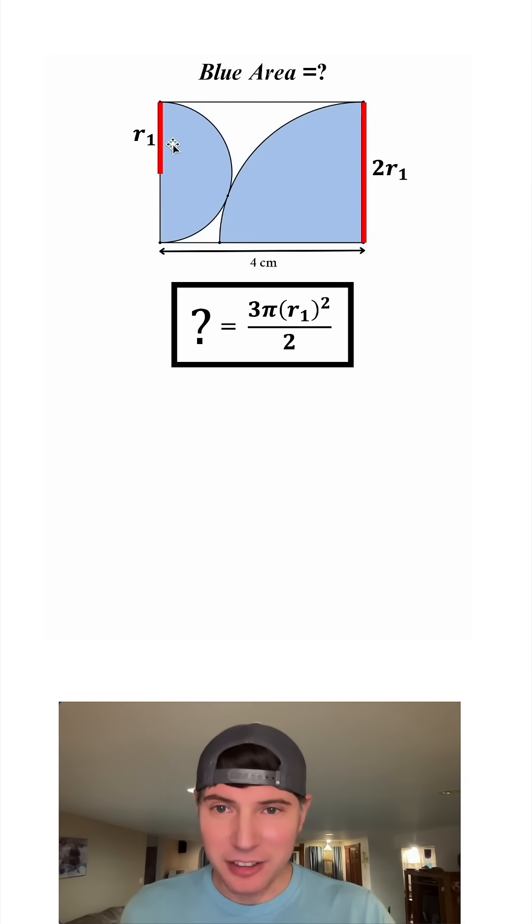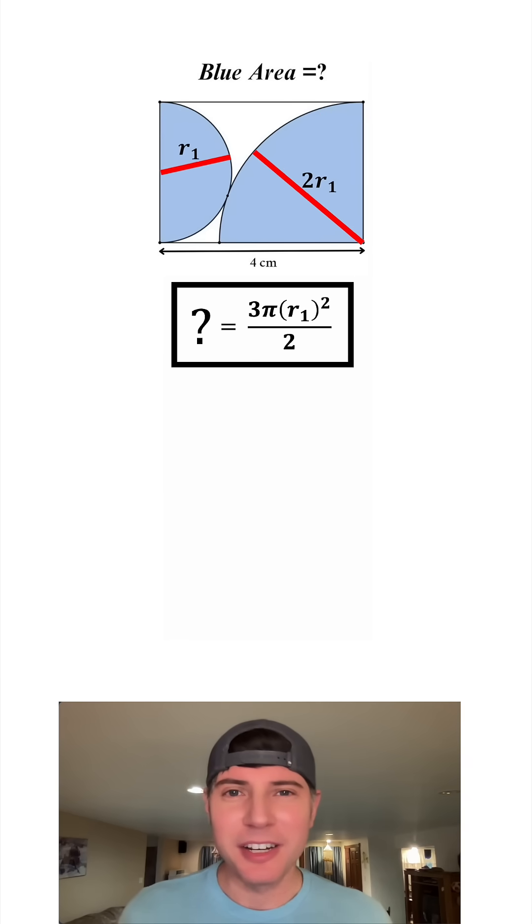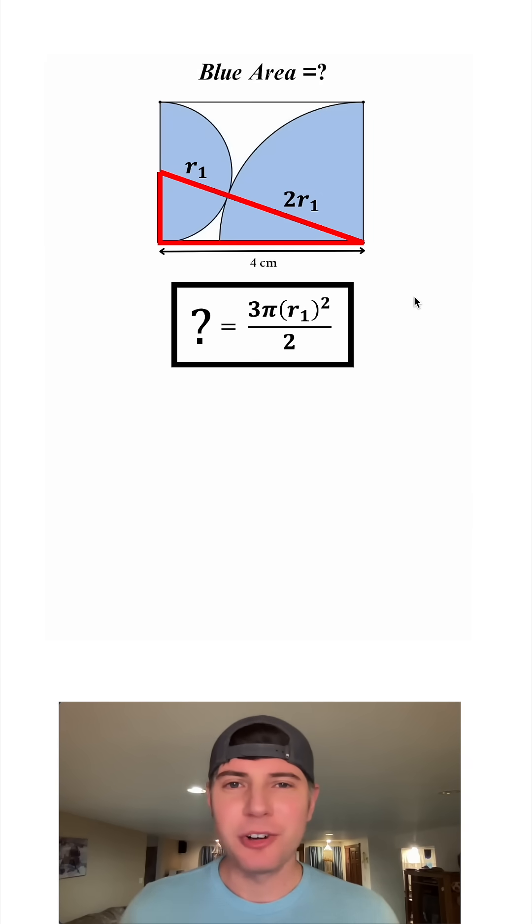Now all we have to do is find the length of r sub 1, and I think I know how to do that. Take each of these radii and rotate them to right here. Let's complete this right triangle. We already know that the base is 4 centimeters.